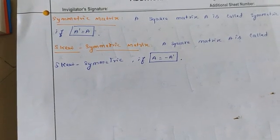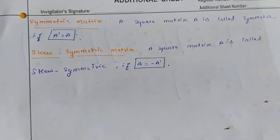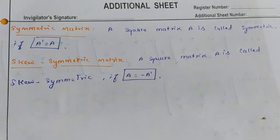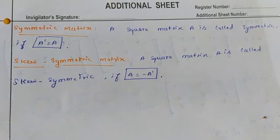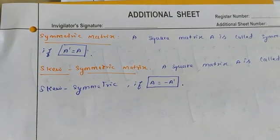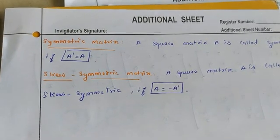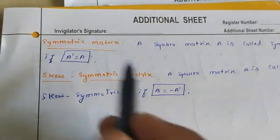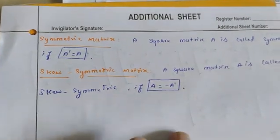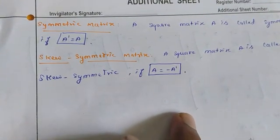What is the condition? A square matrix A is called symmetric if the condition A dash equal to A is satisfied — that is, A transpose equal to A.